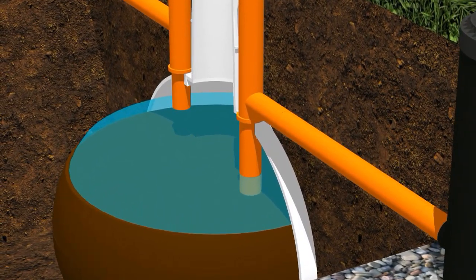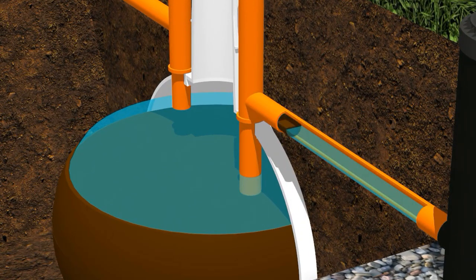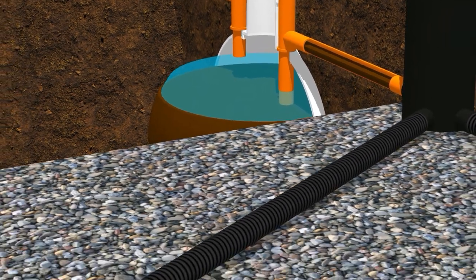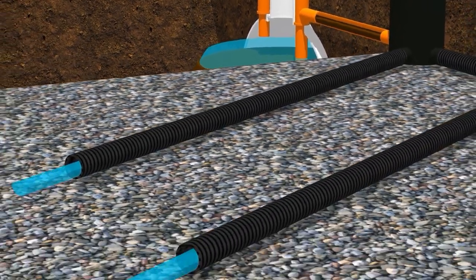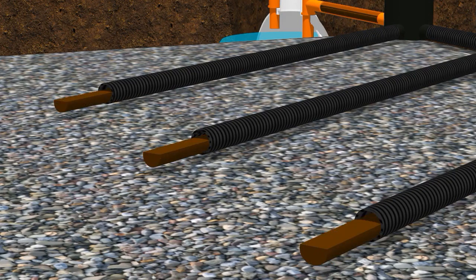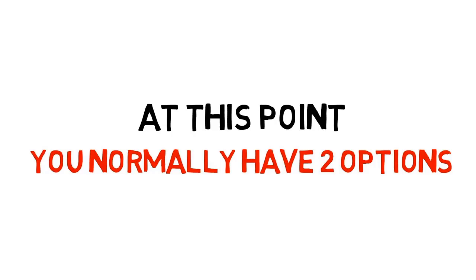And from the outlet pipe, all the fat and the grease and the sludge will start to make its way deep into the soak away. And before long, this fat and grease and sludge will completely clog and block up your entire soak away system.